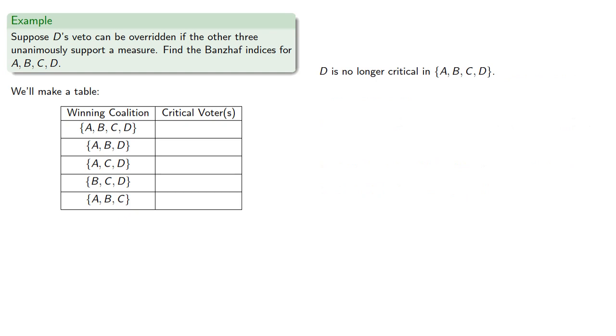Now D is no longer critical in the coalition of all four voters. The original winning coalitions still have the same critical voters. And in the new coalition, losing any voter would turn the coalition into a losing coalition, so every voter is critical.